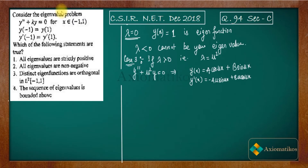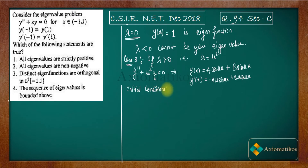For Case 3, λ > 0. We write λ = μ², where μ is any number. The equation becomes y'' + μ²y = 0. This is again a homogeneous ODE with constant coefficients, giving a general solution in terms of cos and sin. We now apply the initial conditions to find the exact eigenvalues.